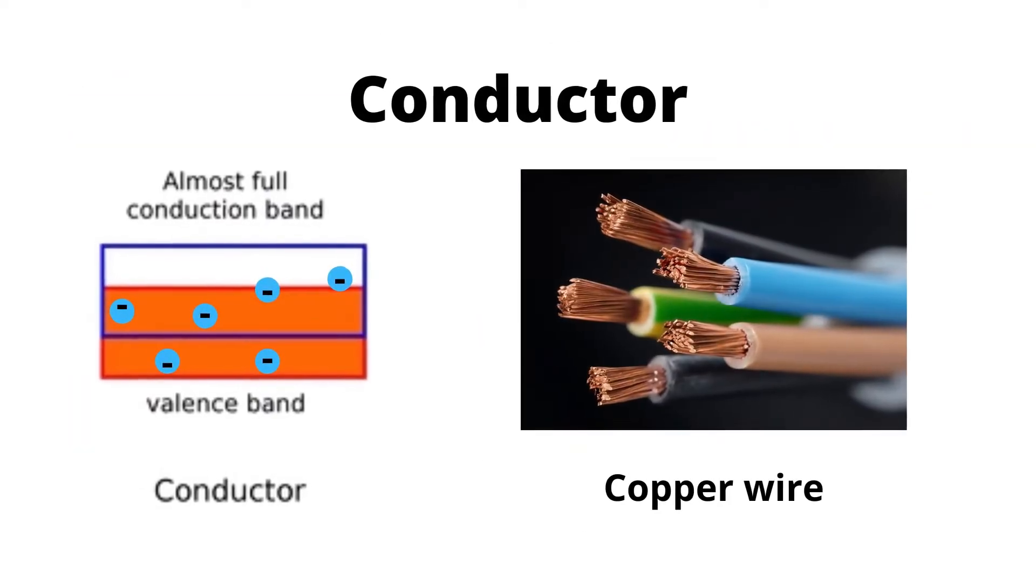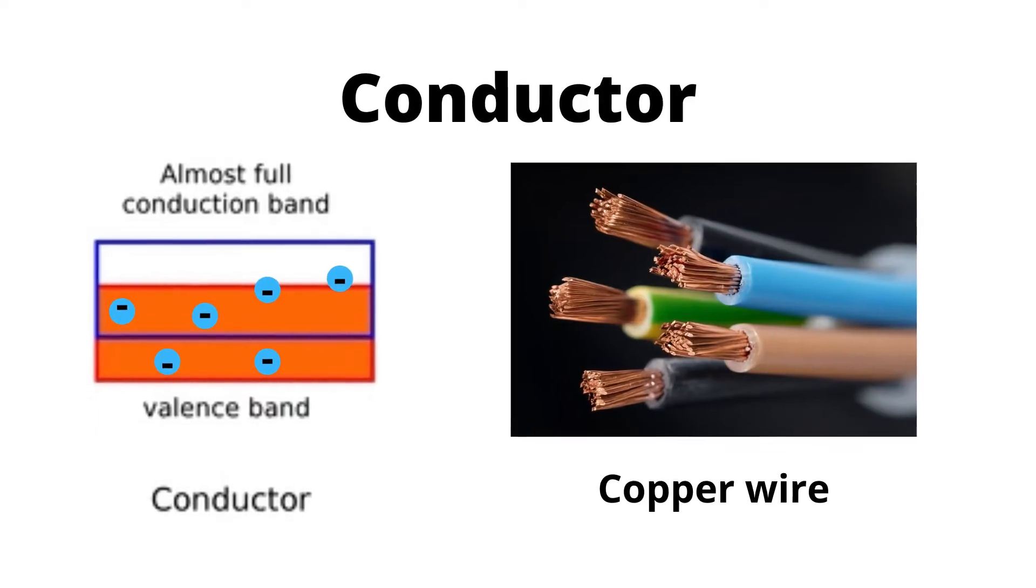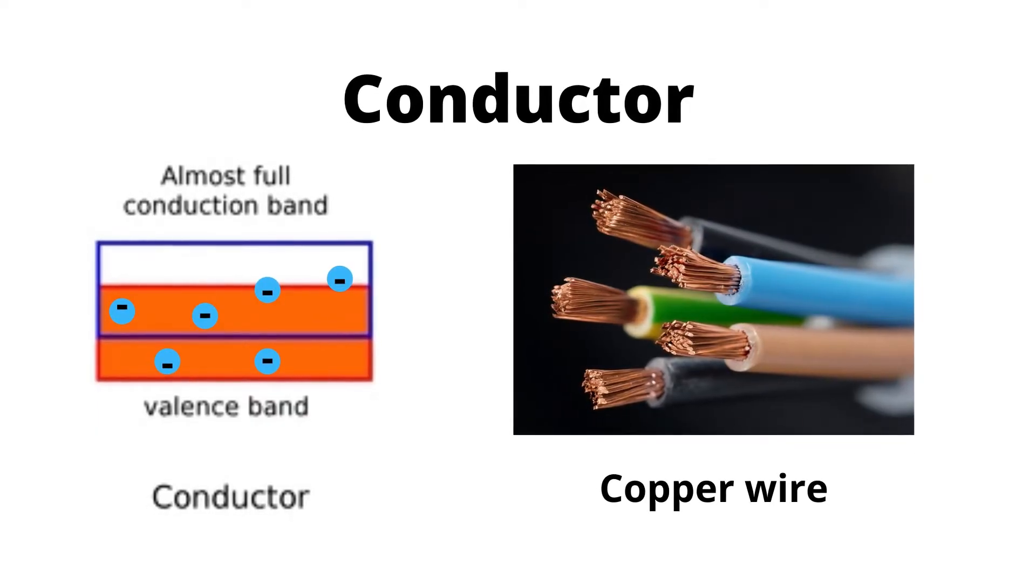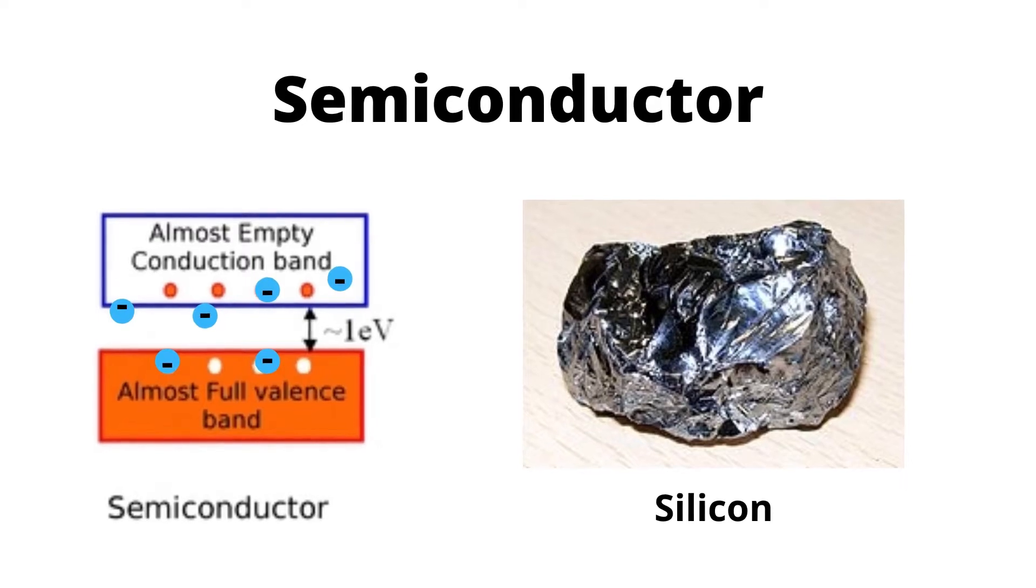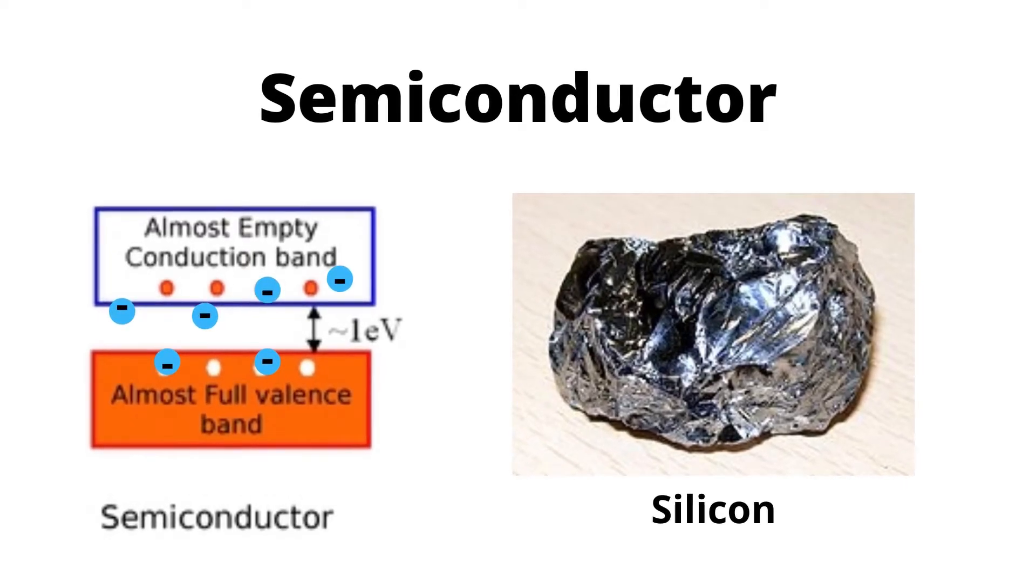Conductors have the lowest band gap, which means that small amounts of energy are enough to allow the flow of electrons. Semiconductors have a band gap between those of insulators and conductors.